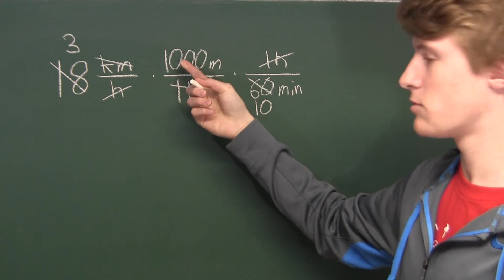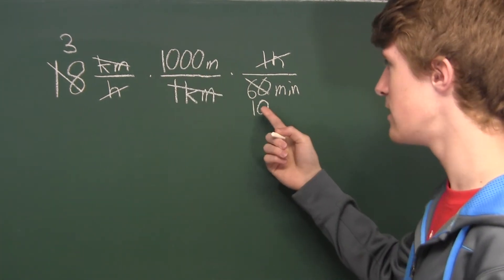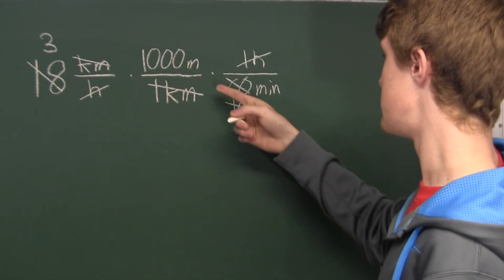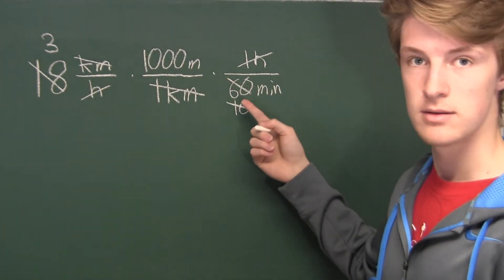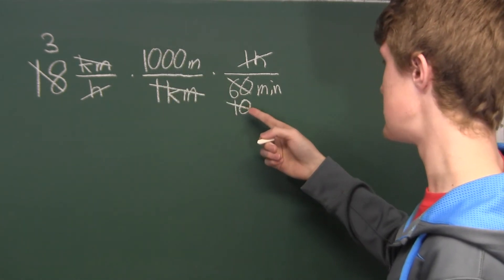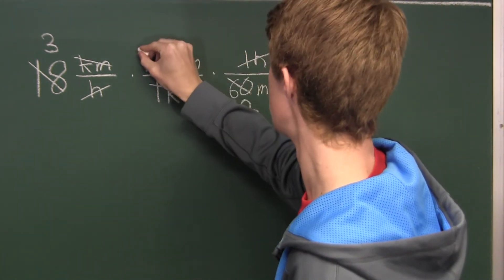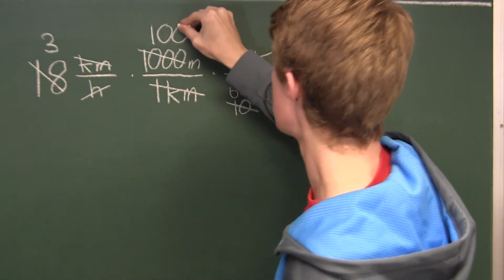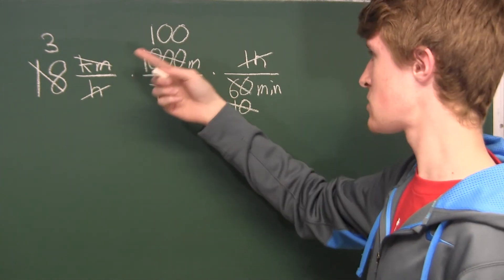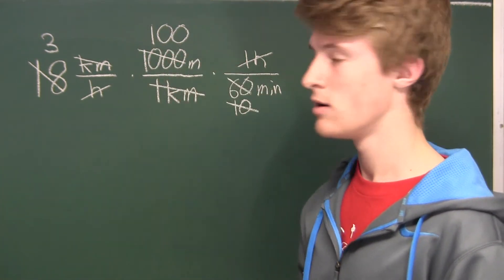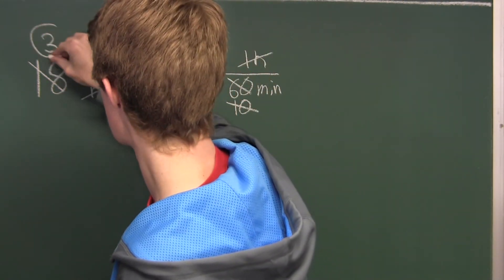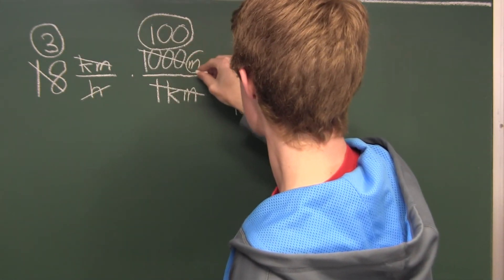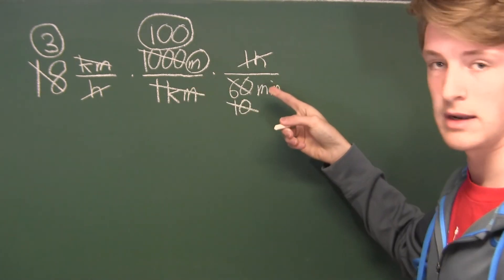Here we have 1,000 in the numerator and just 10 in the denominator, so we can easily just divide both sides by 10. So here we have 1,000 divided by 10 is then 100. Now since it's pretty messy, I'm going to circle what we have left. What we have left is this 3, the 100, the meters, and also the minutes in the denominator.